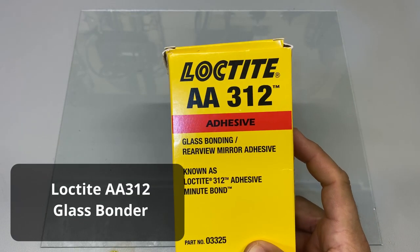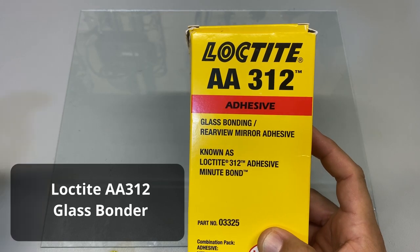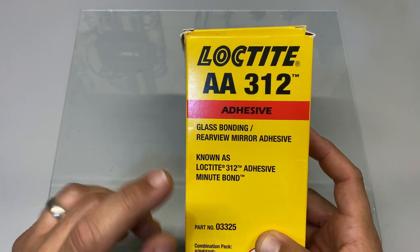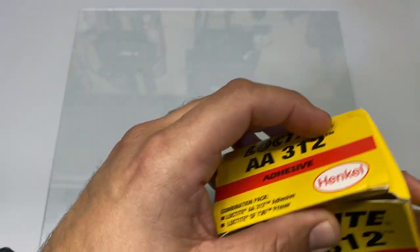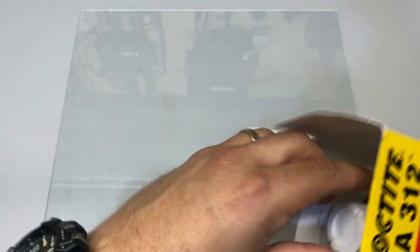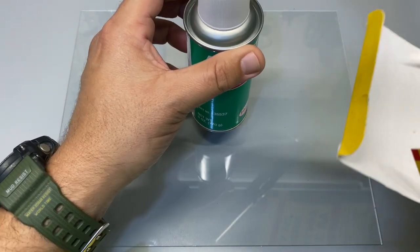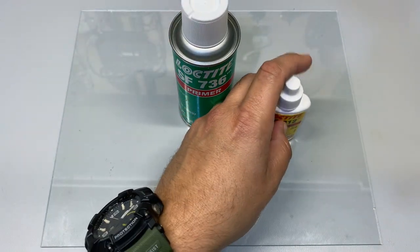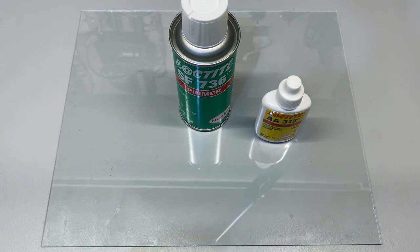I've actually found a better product that does a better job. And that's this right here, Loctite AA312. This is specifically made for glass bonding with a rearview mirror type adhesive. This is actually a two-part kit that comes with a primer and a glue. So how does this one work?